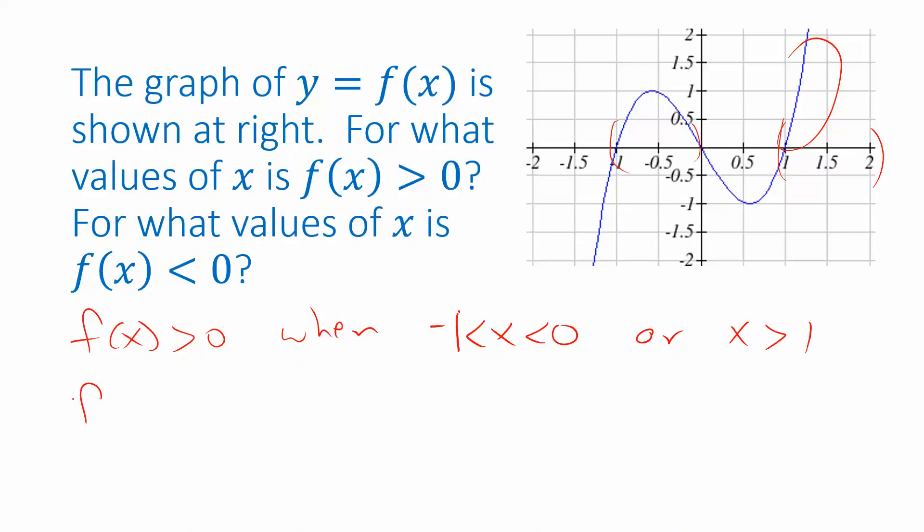And then, f of x is less than 0 when x is on this part of the graph, so that's to the left of negative 1, so x is less than negative 1, or any point in this part of the graph, which is x between 0 and positive 1.